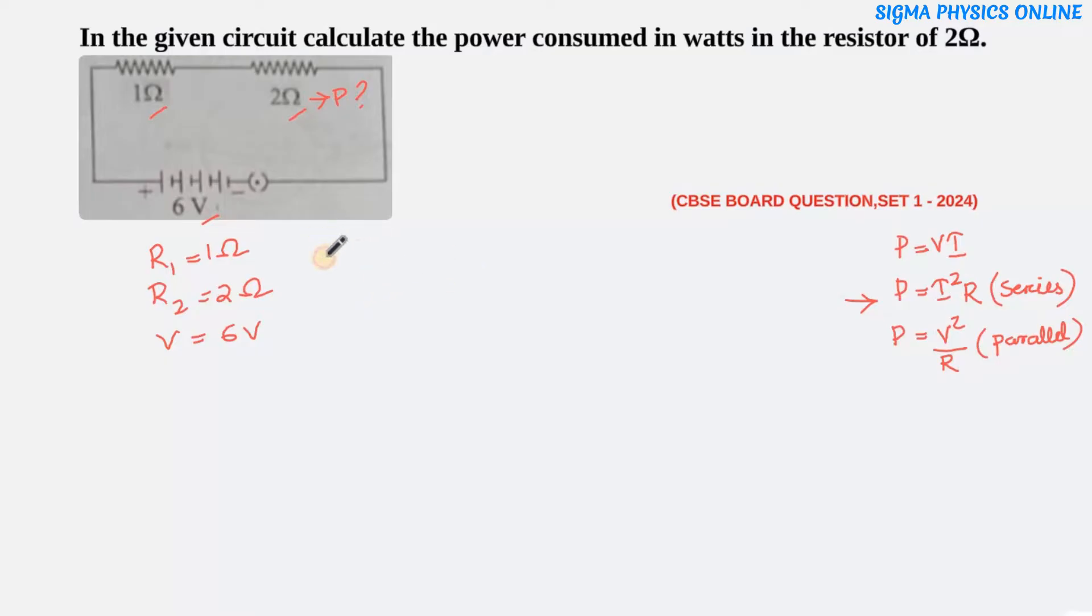Now we need to find the total resistance in series. The equivalent resistance Rs is given by R1 + R2. R1 is 1 ohm and R2 is 2 ohm, so the total resistance of the circuit is 3 ohm.